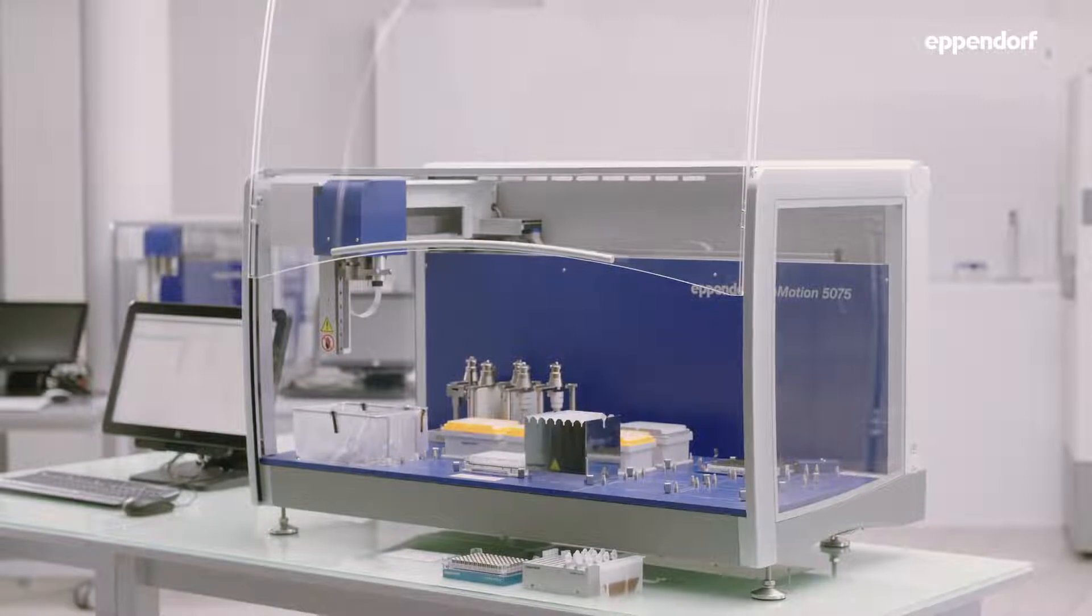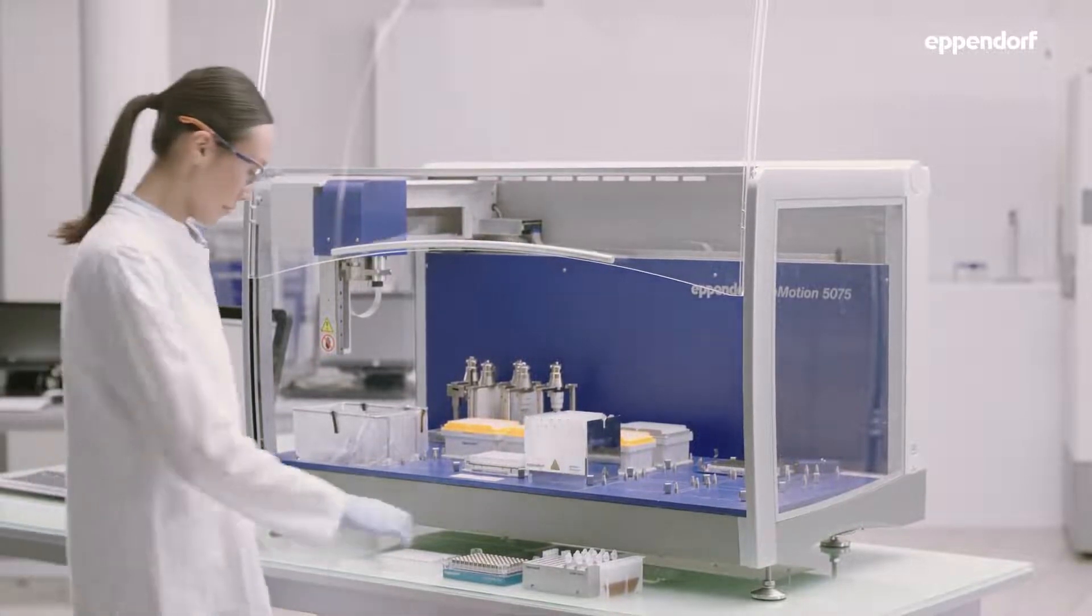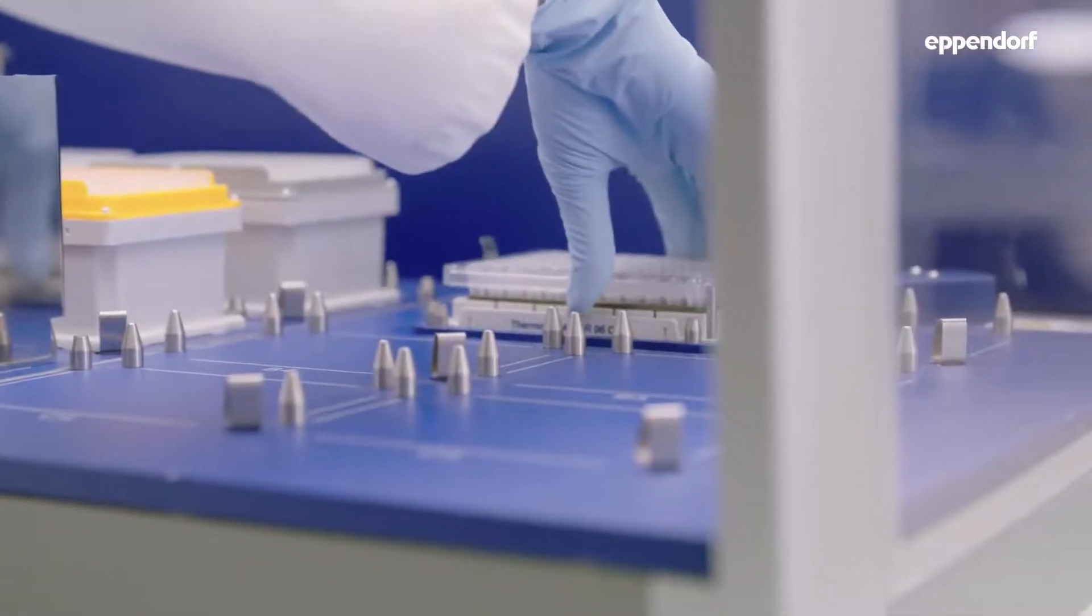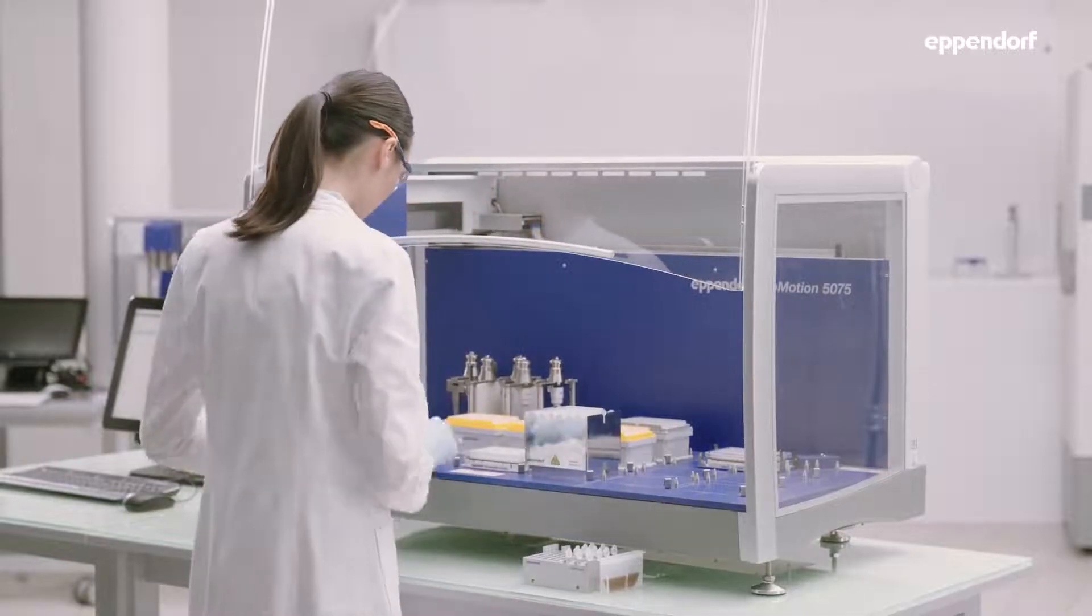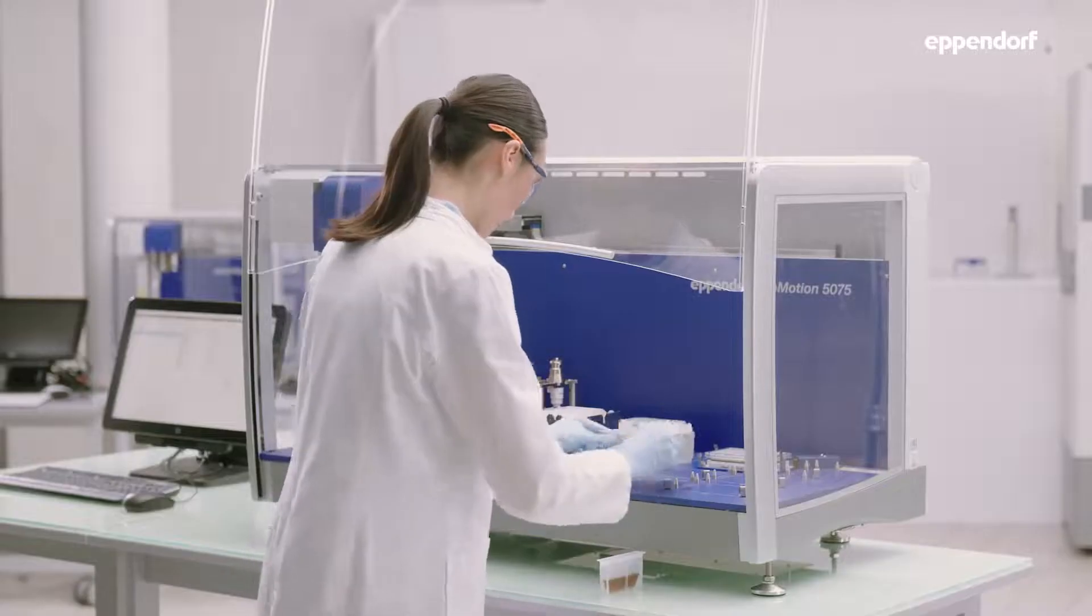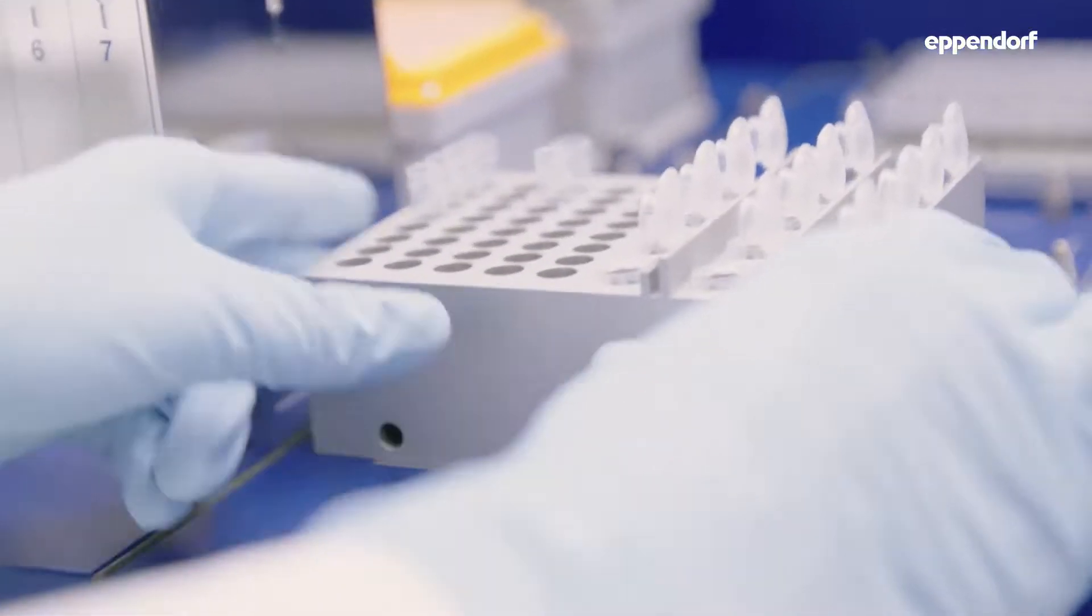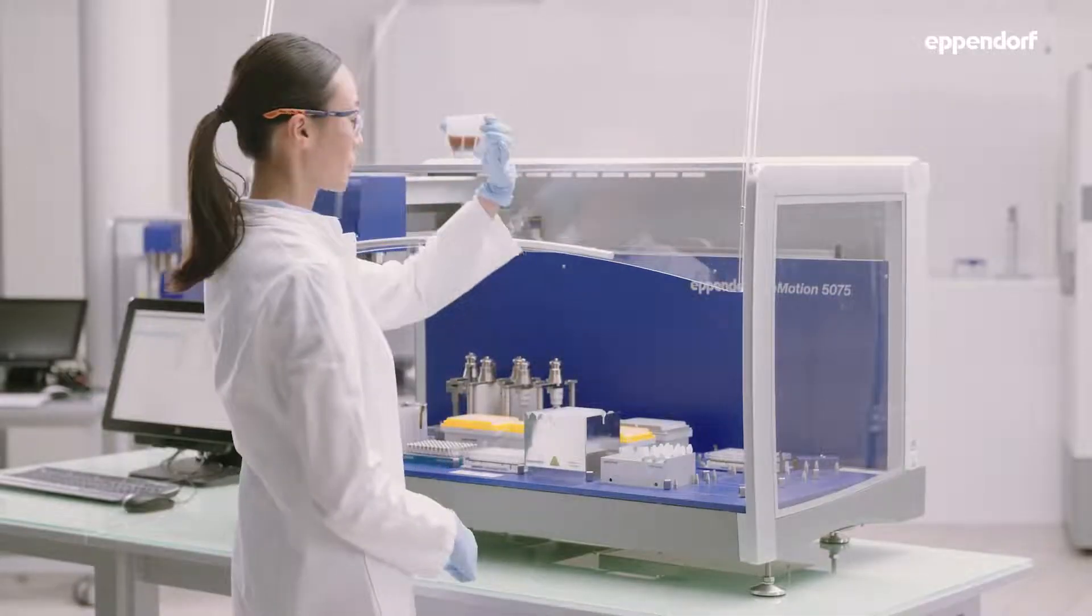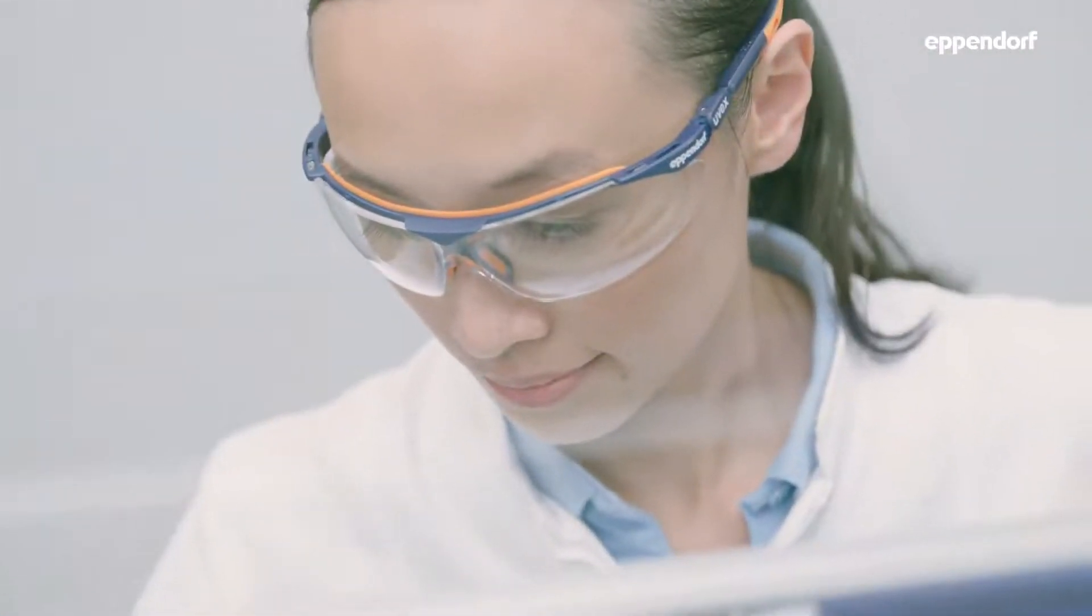To perform bead cleanups on the EP-Motion, the device must be equipped with the sample plate, a 96-well magnet plate, reagents like wash and elution buffers, and pre-homogenized bead suspension.